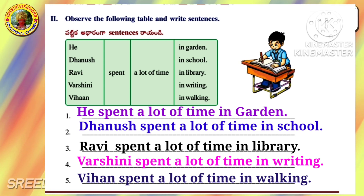Read the given passage from your lesson — from 'Pingala's father observed' to 'not at all happy'. Pick out the words from the passage having the following words as a part of them. The word having 'east': Least. The word having 'out': Sprout. The word having 'ill': Will. The word having 'there': Gathered. The word having 'ant': Plant.